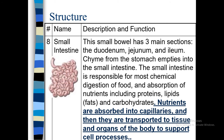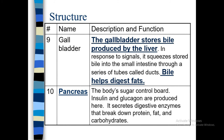Next is the gallbladder. It is an extra part of the digestive system set aside. The gallbladder stores bile produced by the liver. When the stomach and digestive system respond to the gallbladder, it squeezes stored bile juice, which enters into the small intestine through a series of bile ducts. Bile helps digest fat.